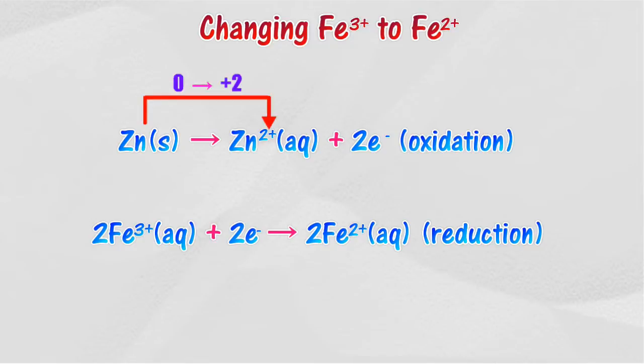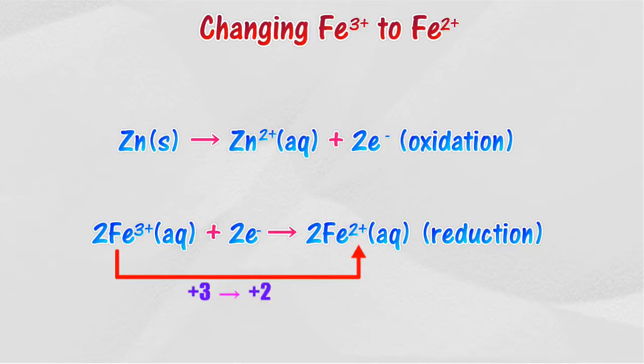Zinc releases electrons to form zinc ion. The transfer of electrons occurs from zinc to ferrum 3 ion. Ferrum 3 ion receives electrons to form ferrum 2 ion.